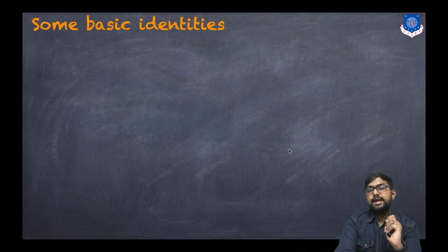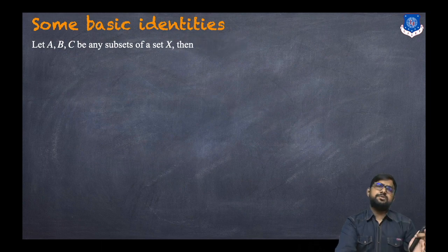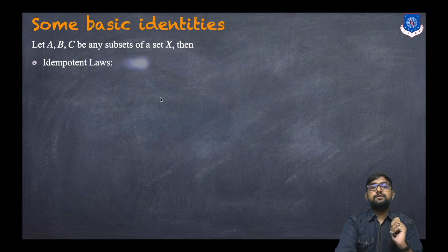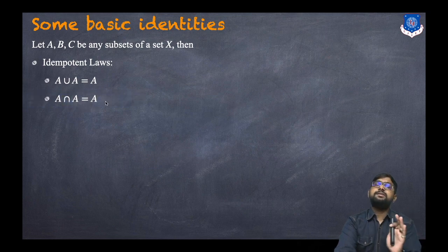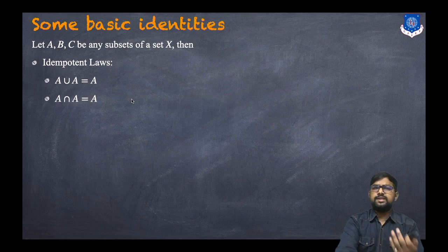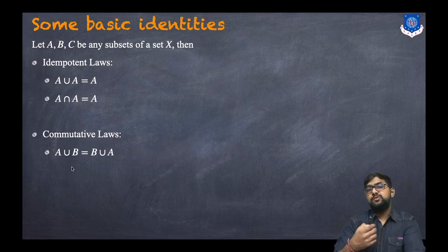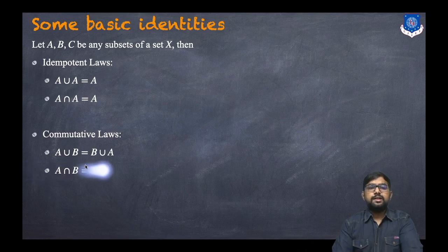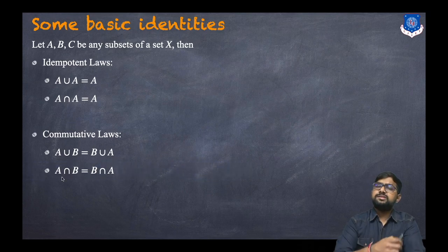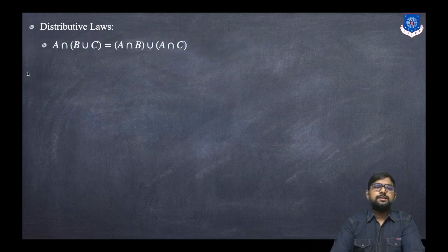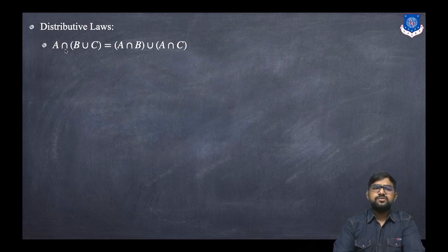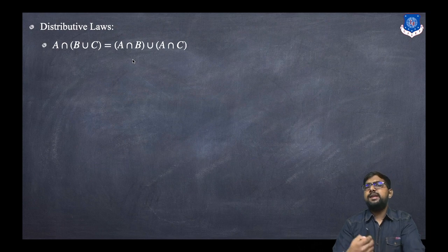Now let us discuss some basic set identities. Let A, B, C be any subsets of set X. The first law is the idempotent law: A ∪ A = A and A ∩ A = A. The commutative law states A ∪ B = B ∪ A and A ∩ B = B ∩ A — you can change the order. The distributive law states A ∩ (B ∪ C) = (A ∩ B) ∪ (A ∩ C), and changing the operators gives the second distributive law.